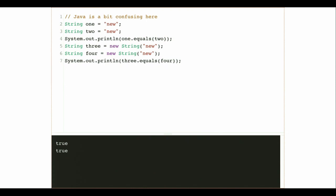Instead, you need to use the .equals() method that all objects have. Calling string1.equals(string2) compares the actual contents of the two strings. This is how you check for equality in Java, and going forward most of what we work with will be objects. Whenever you compare two objects, use .equals() — using double equals will not give the right answer. I'll explain later what double equals actually does when used on objects.